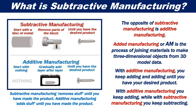The opposite of subtractive manufacturing is additive manufacturing, or AM, which is the process of joining materials to make three-dimensional objects from 3D model data. With additive manufacturing, you keep adding and adding until you have your desired product.